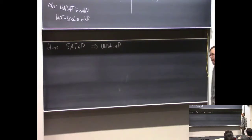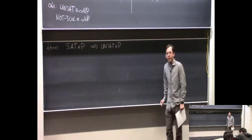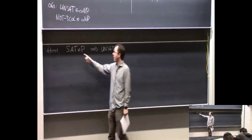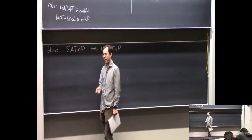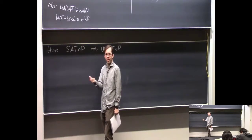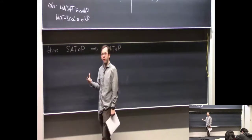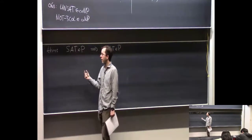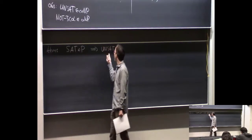If SAT is in P, then you know there's a polynomial-time algorithm—you solve it and just reverse the answer. If SAT is in P, that means there's a polynomial-time algorithm that, given a Boolean formula, accepts if it's satisfiable and rejects if it's unsatisfiable. Just take that and reverse the accept and reject states. Then you'd have a polynomial-time Turing machine that accepts if the formula is unsatisfiable and rejects if it's satisfiable—so it's deciding UNSAT.